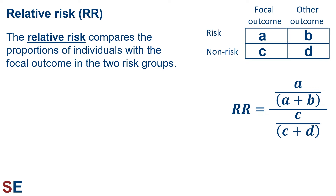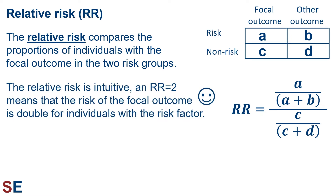We can see here that the term risk isn't always something that we think increases the focal outcome. The relative risk idea can also be used to study factors or behaviors that we think may be protective. The relative risk is a nice statistic in that it's intuitive. An RR of 2 means that the risk of the focal outcome is double for individuals with the risk factor compared to those without the factor. Likewise, an RR of 1.5 would mean a 50% increase in risk, whereas an RR of 0.7 would mean a risk of only 70% compared to the non-risk group.